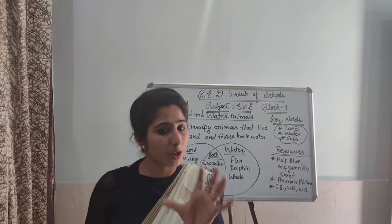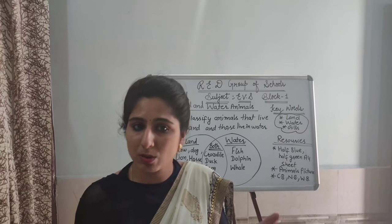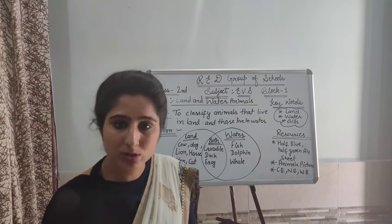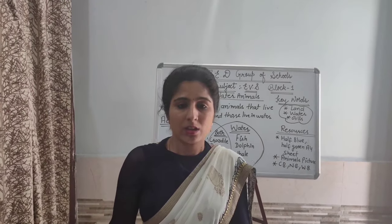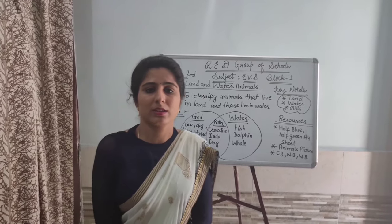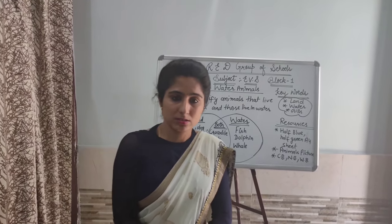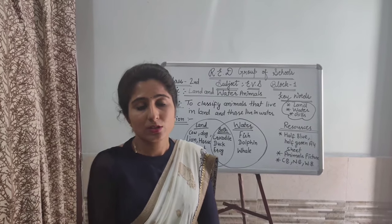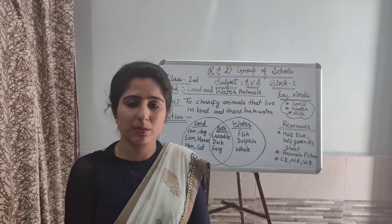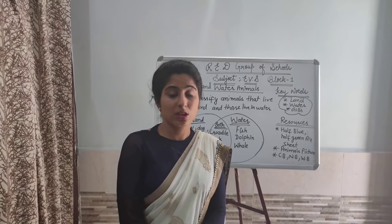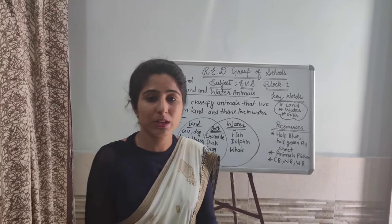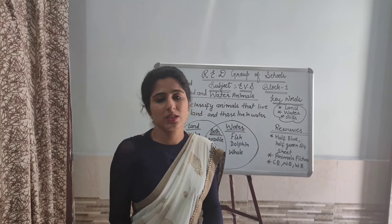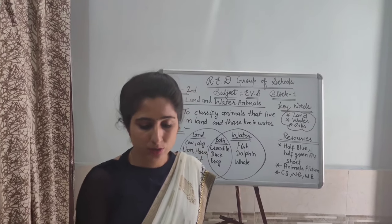My next question is: why do you think water animals have some similarities with each other? Water animals like fish, whale, duck, and dolphin all live in water. What are those similarities? Water animals have scales on their bodies. The second similarity is they have gills — with the help of gills they can breathe in water. Just as we live on land, if we go into water we cannot breathe, but fish and other water animals have a special feature — gills — so they can easily breathe in water.